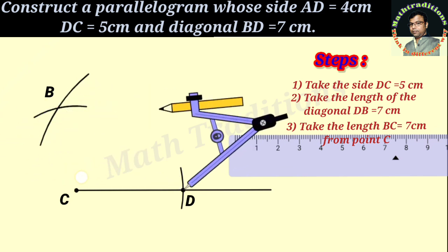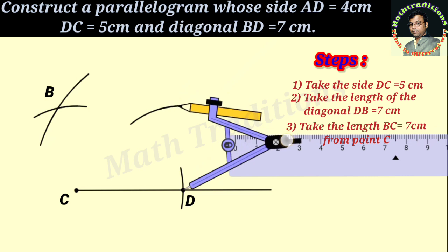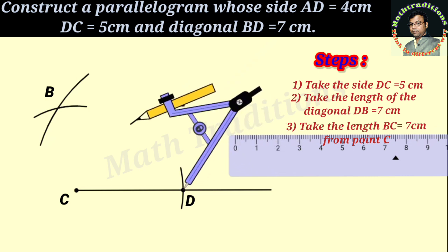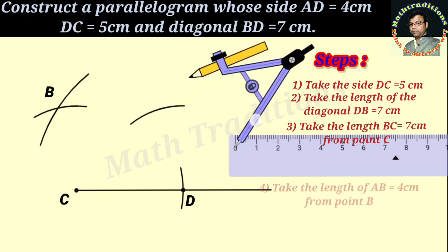We will take the same length 4 cm from D to get our side AD.